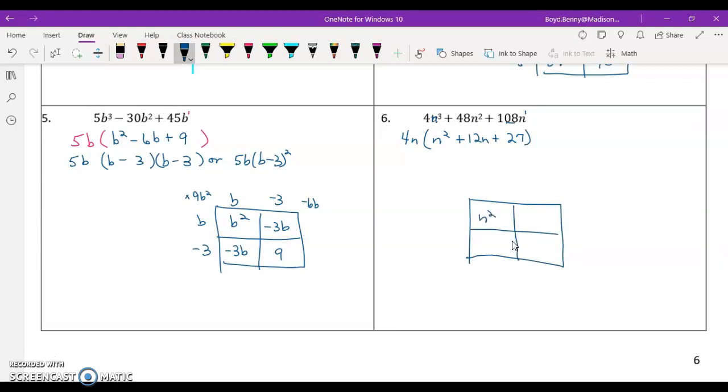Let's draw our box. We'll put my n squared in the top left, my 27 in the bottom. What two numbers multiply to give me 27n squared but need to add up to 12? The only two numbers that fit the bill are 3 and 9. Let's work this bottom row first. Common factor down here is a 3, and 3 times 9 is 27.